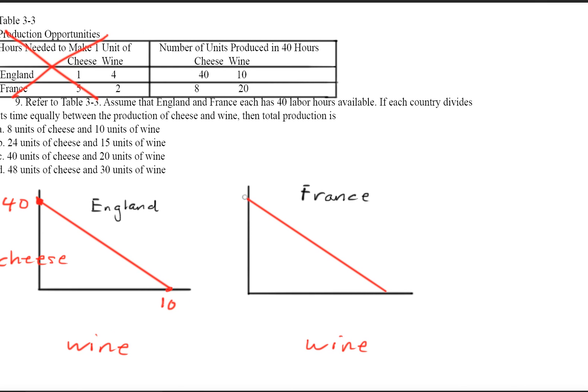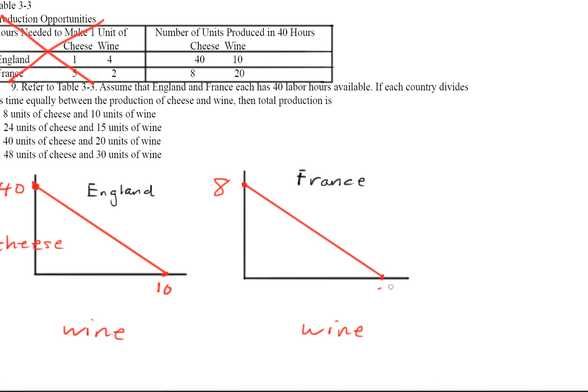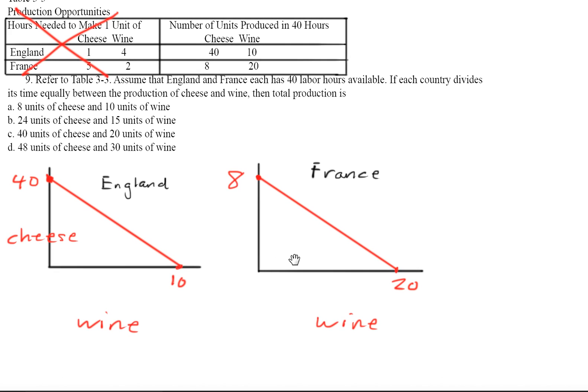And over here with France, at most it can produce 8 units of cheese. And over here, 20 units of wine.